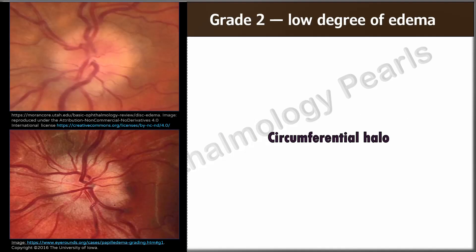In grade 2, the halo becomes circumferential. There is nasal margin elevation and obscuration of the entire temporal margin, but no major vessel obscuration — that is, the central artery and vein on the disc and its margin are clearly seen.